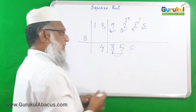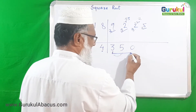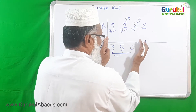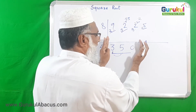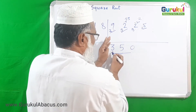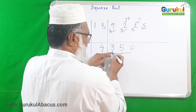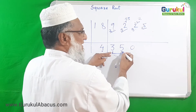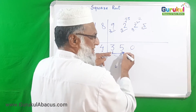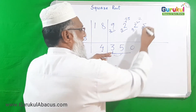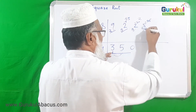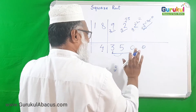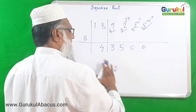Now we have three digits: 3, 5, and 0, giving 350. Finding the dvandva of 350: first and last digit product doubled — 3 × 0 doubled is 0 — and the square of middle digit 5 is 25. Total dvandva is 25. Subtracting 25 from 25 gives 0, so 8 × 0 = 0. We stop here.